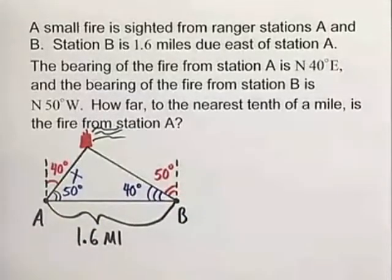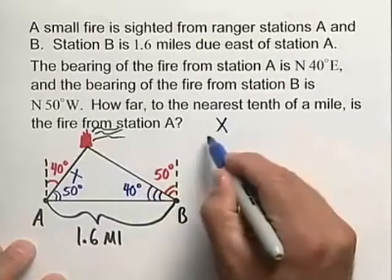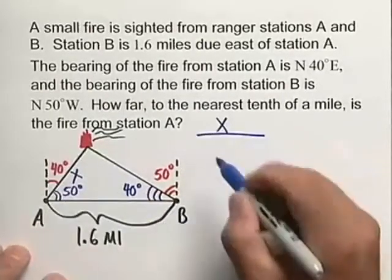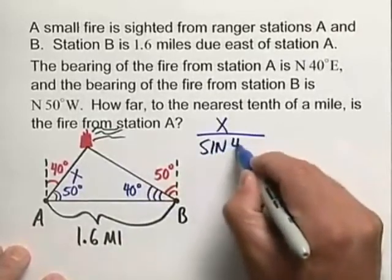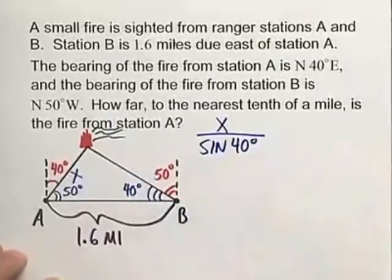And from this we can use the law of sines. So we are looking for the distance, the nearest tenth of a mile, that the fire is from station A and you see our x right here. So we have the x all over the angle opposite it, sine of 40 degrees, again note the relationship here.